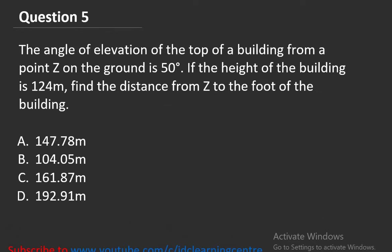Question number 5: The angle of elevation of the top of a building from a point Z on the ground is 50 degrees. If the height of the building is 124 meters, find the distance from Z to the foot of the building. Let Z be the point on the ground. The angle from Z to the top of the building is 50 degrees, and the height of the building is 124 meters.